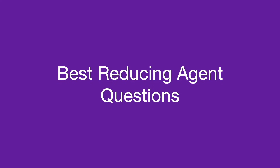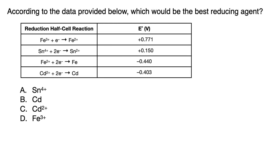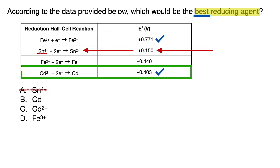For best reducing agent questions, it's the exact opposite, because oxidation and reduction are opposite reactions. Let's look at an example. The question is asking for the best reducing agent. Same as before, eliminate any midline E value answers and narrow down to answer choices associated with highest or lowest E values. But this time, go for the most negative or least positive E value cell, and choose the most negative or least positive ion or atom for best reducing agent.